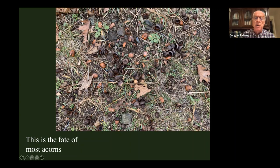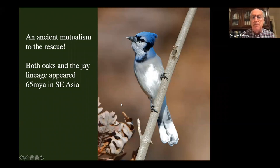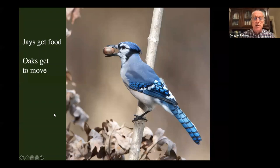You might wonder how oaks ever successfully reproduce with all those things eating the acorns. This is where the relationship with jays comes in — a very ancient mutualism between jays and oaks all over the world. Both lineages evolved about the same time in Southeast Asia, around 65 million years ago, and right away found they could offer each other services.